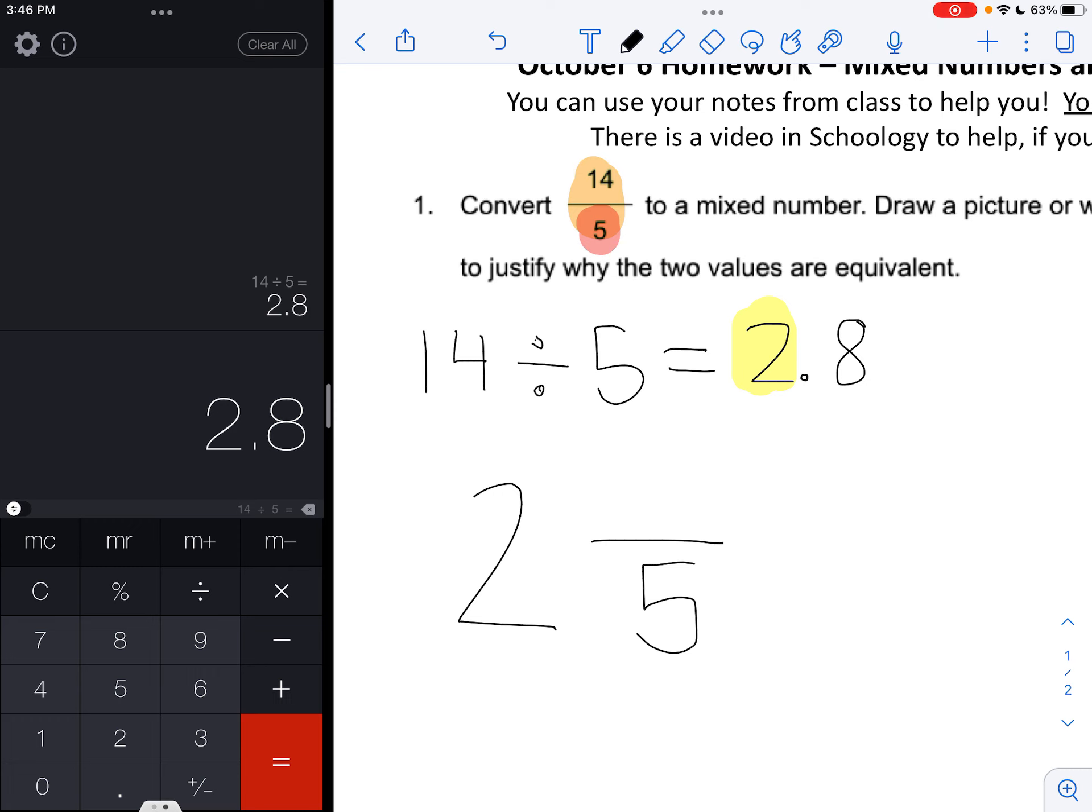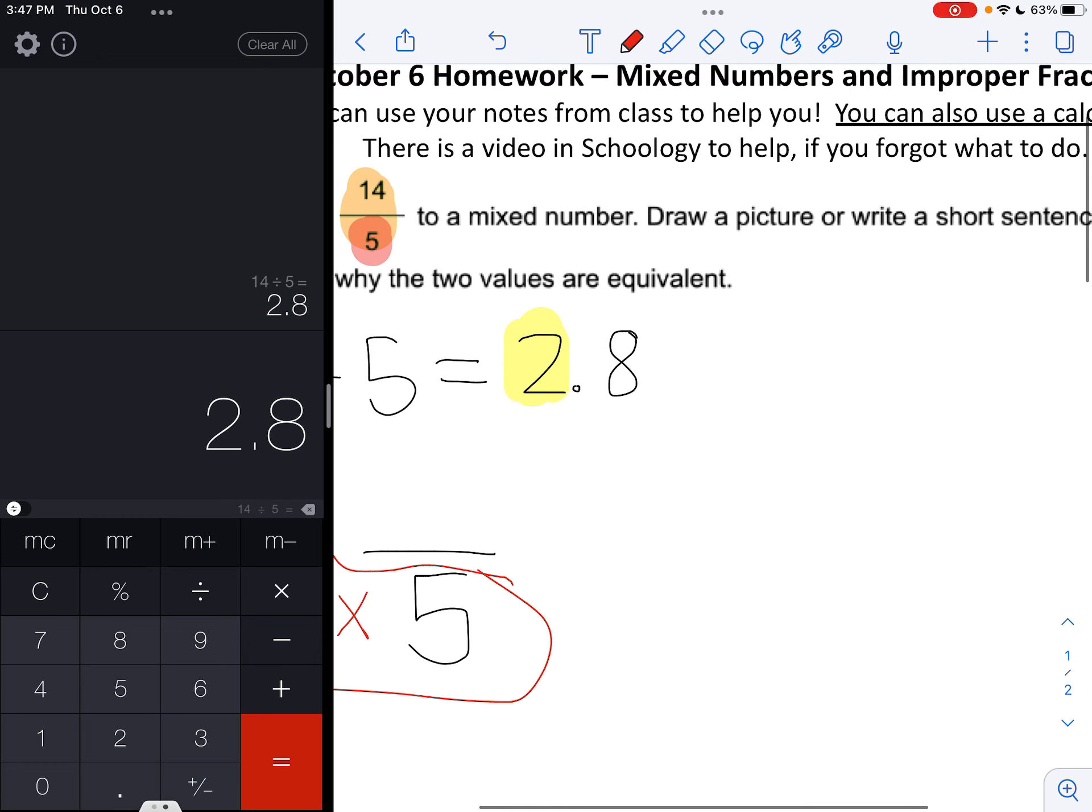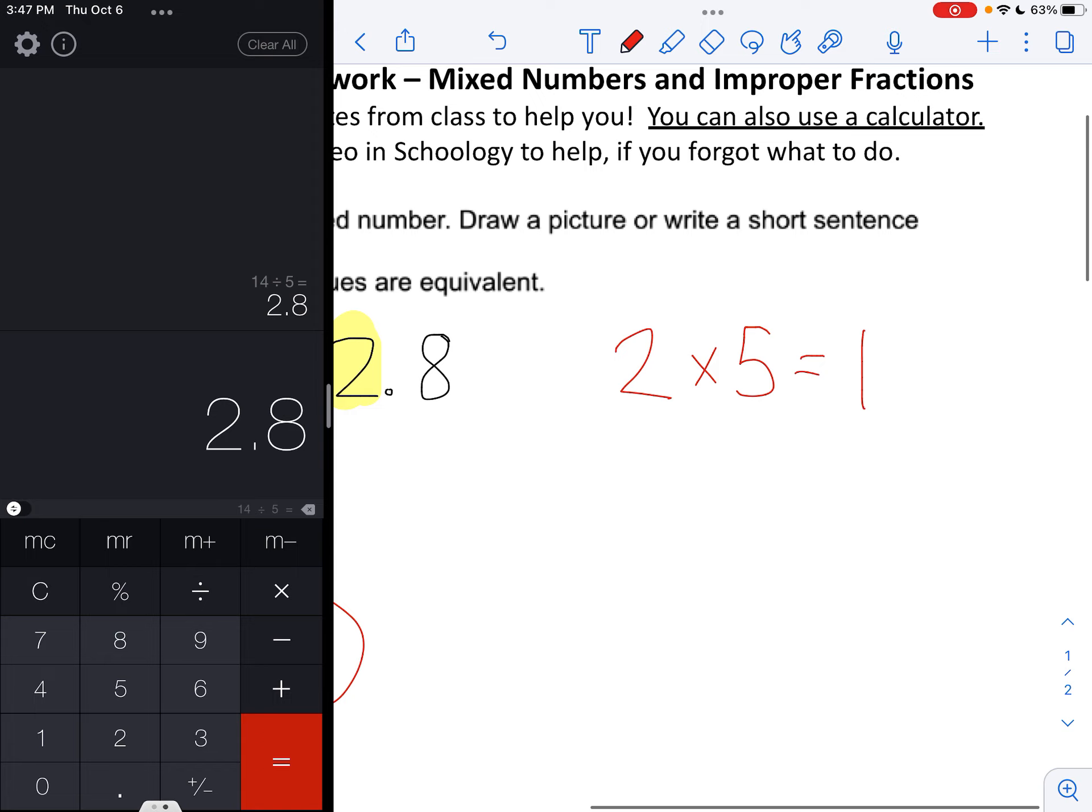The next step is to find out what we put in the top of the numerator. So we draw a circle around the 2 and the 5, and we multiply these two. So we have 2 times 5 equals 10.